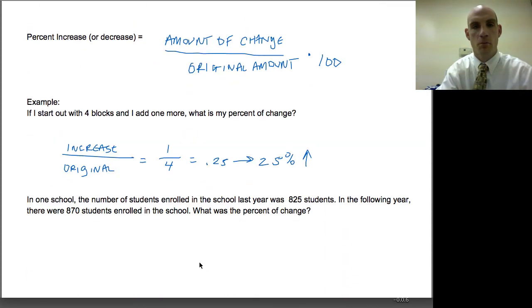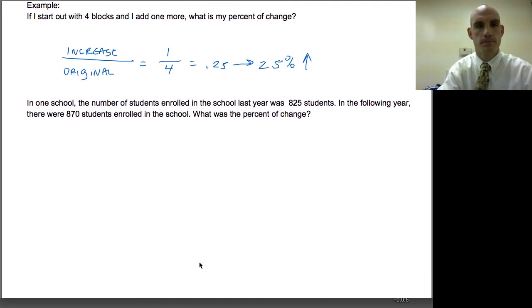If I look at a more real-life type of example: In one school, the number of students enrolled in the school last year was 825 students. In the following year, there were 870 students enrolled in the school. What was the percent of change?